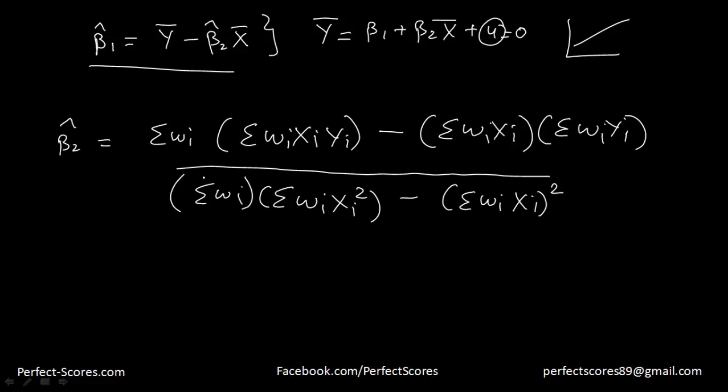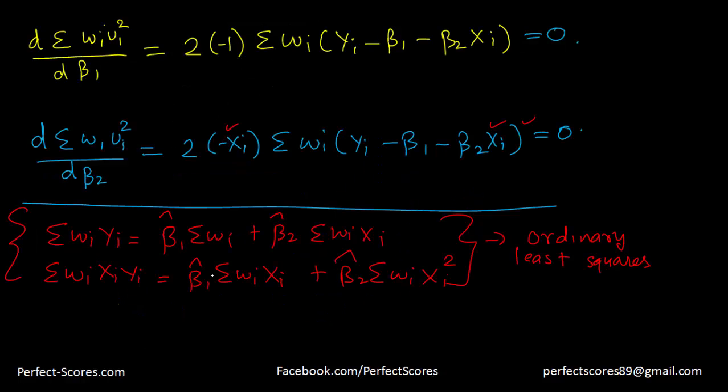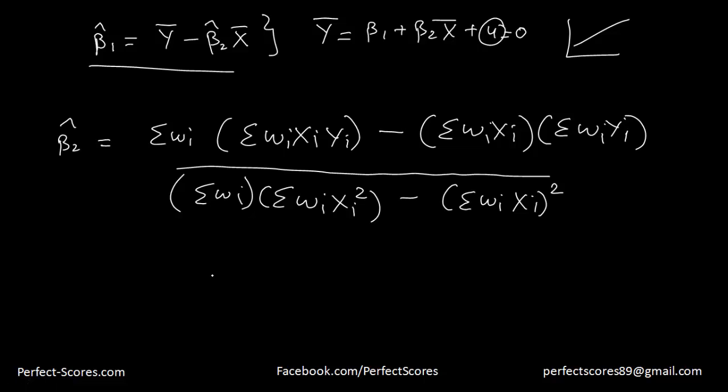So that covers this video. We derived and followed through the discussion on weighted least squares, and showed how we can remove the error of heteroscedasticity from the model. In future videos, we'll be talking about the detection of heteroscedasticity using informal and formal methods like the Park test and Spearman's rank correlation test. Thank you very much for watching, and I'll see you in the next video.